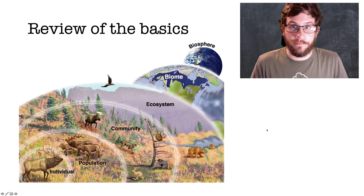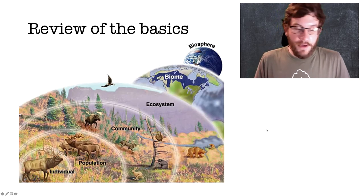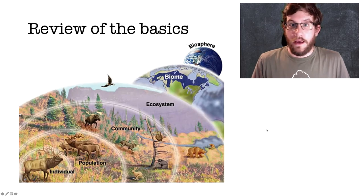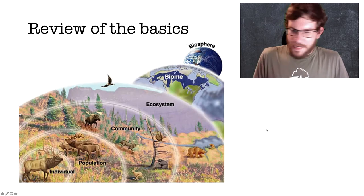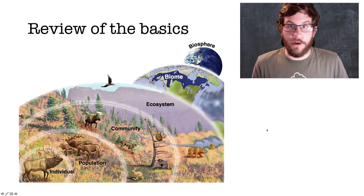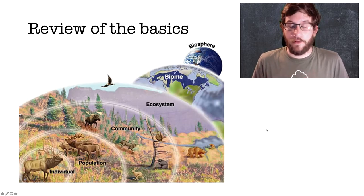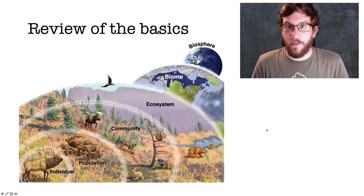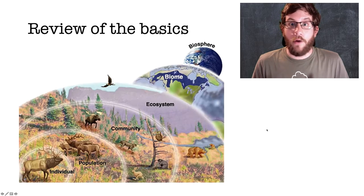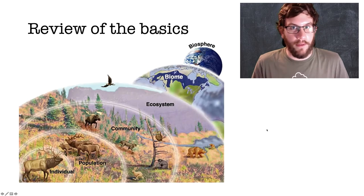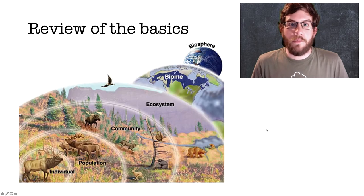Then we have a population, which consists of all the members of the same species living in a region, and then finally the individual itself. The ecosystem, community, and population are all very scale-dependent — an ecosystem could be the underside of a rock in your garden or the entire northern hemisphere of the world. Scale is very important and will dictate the different factors that go into it. At the heart of all this is species interactions.